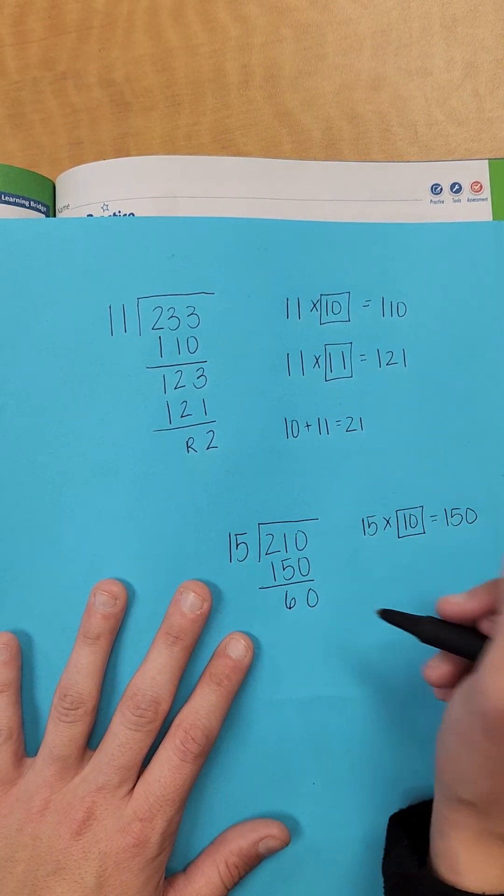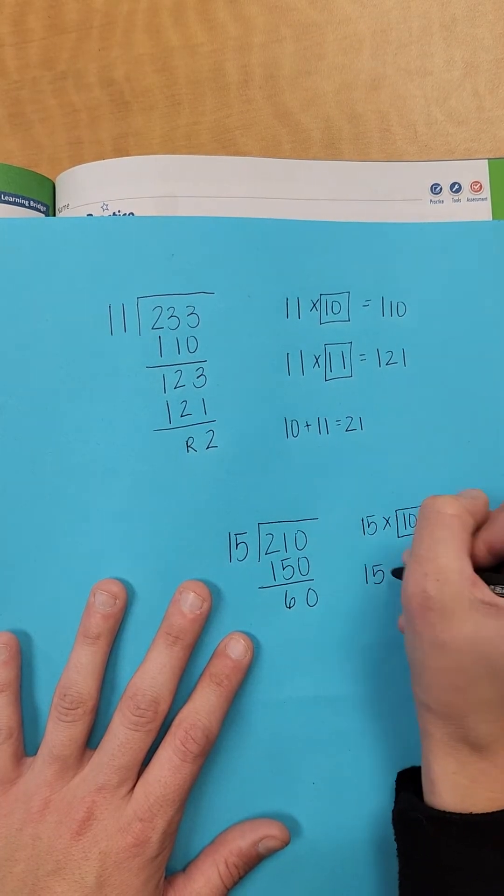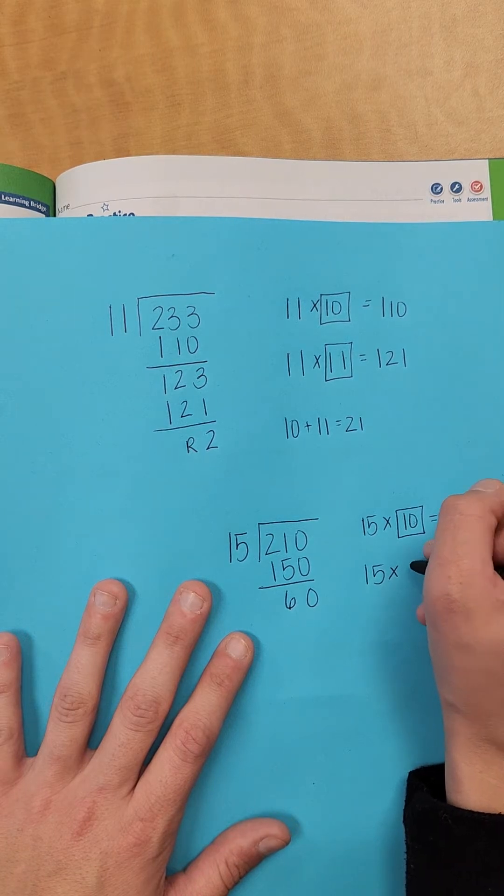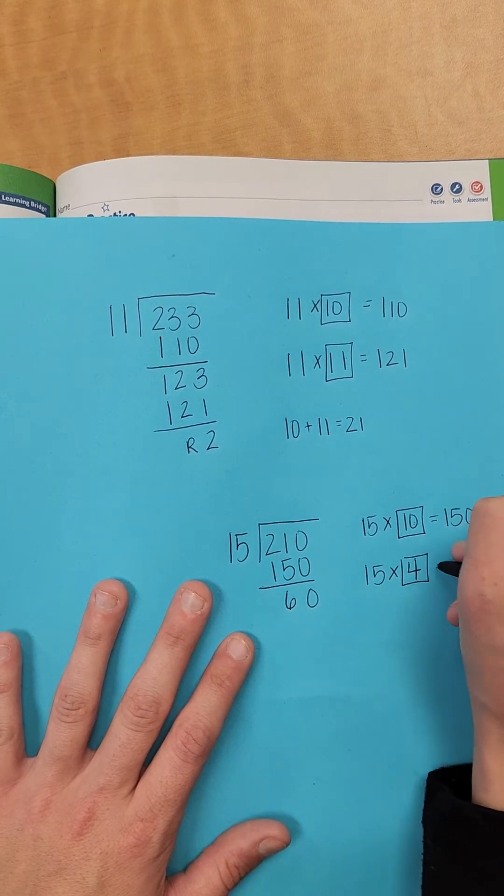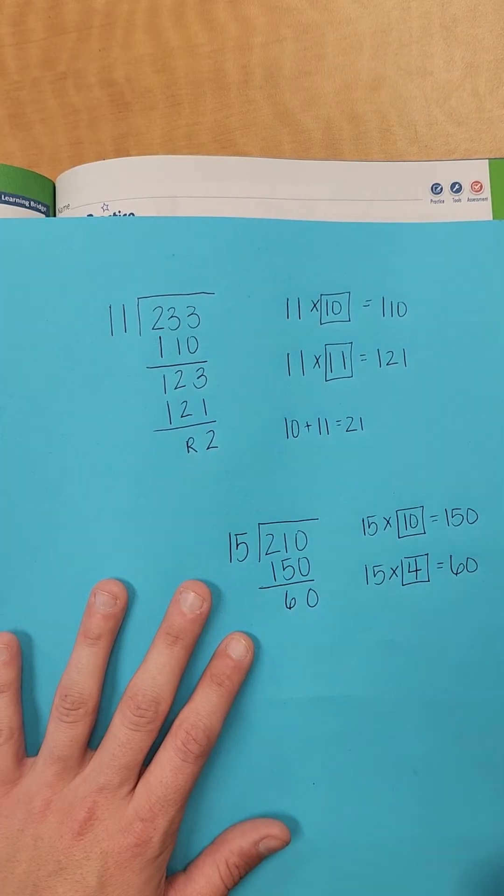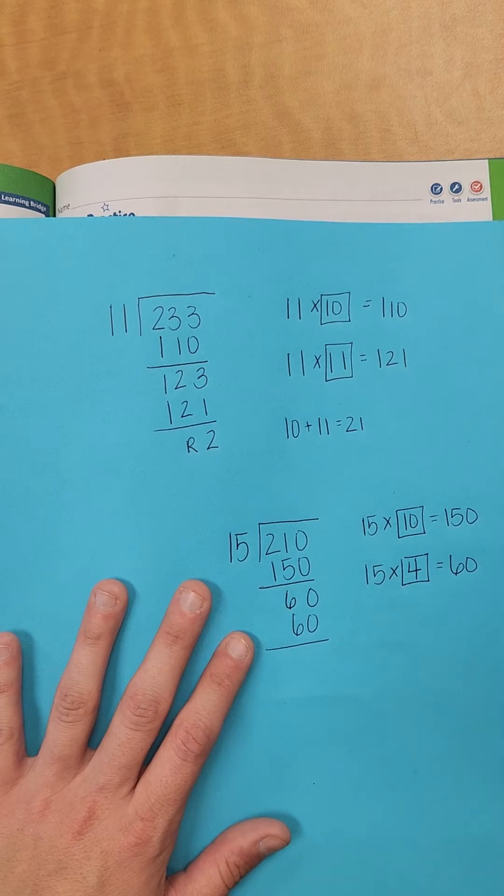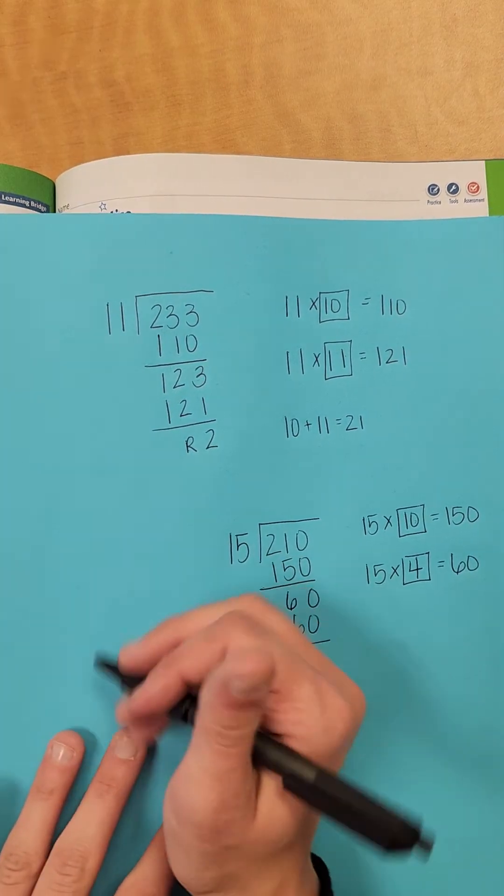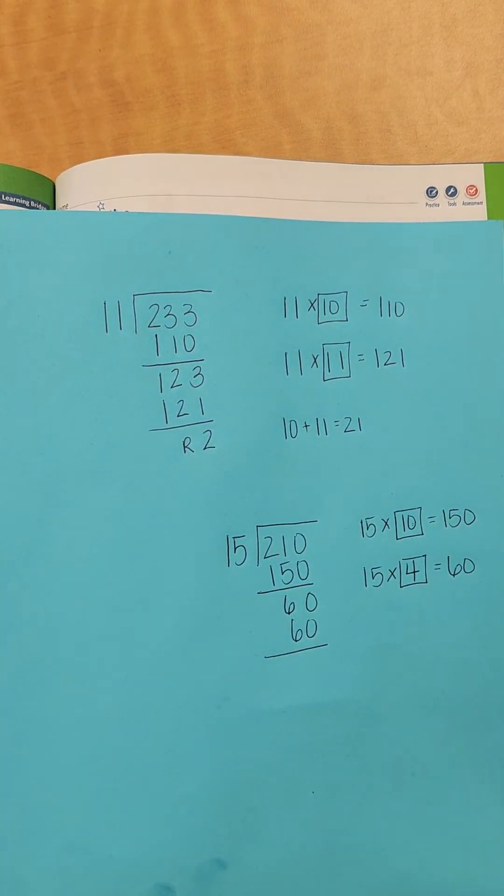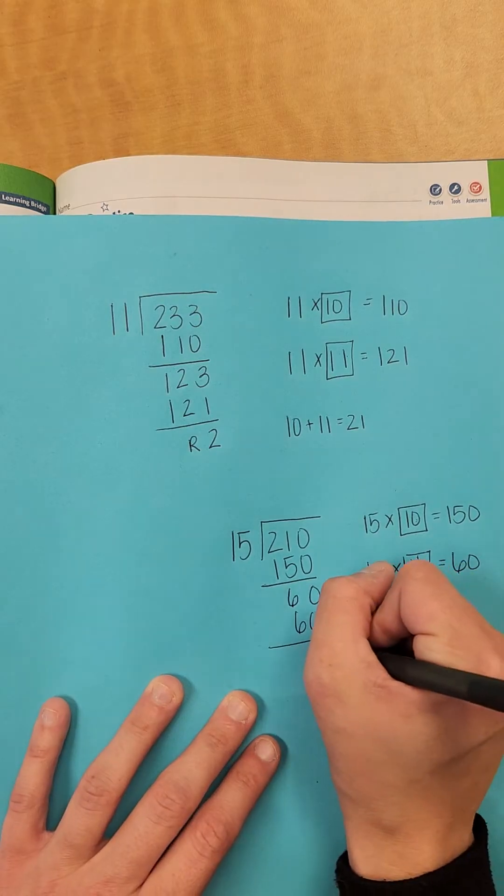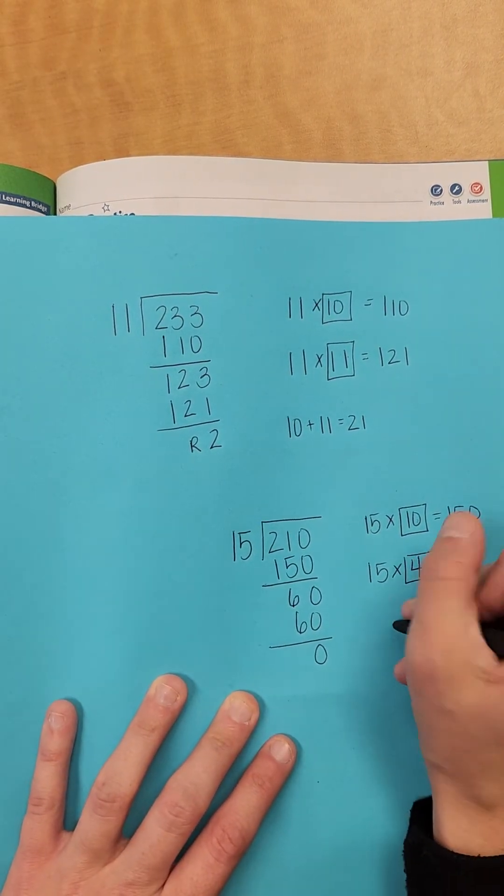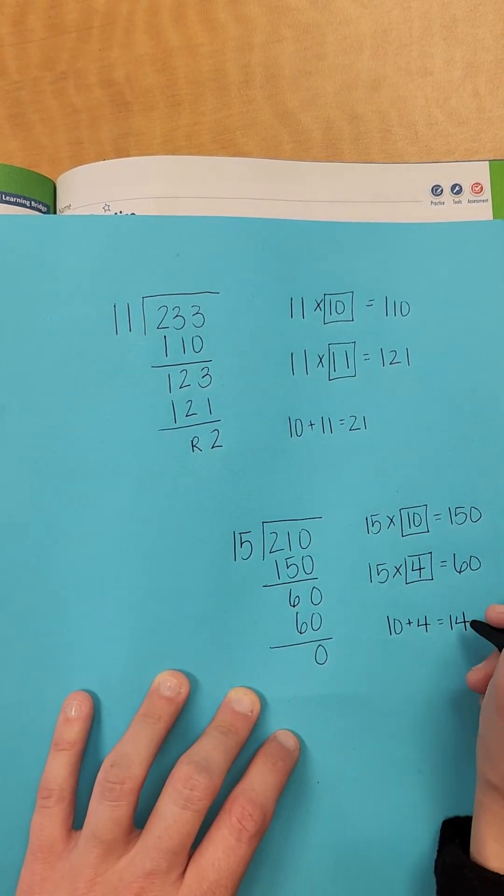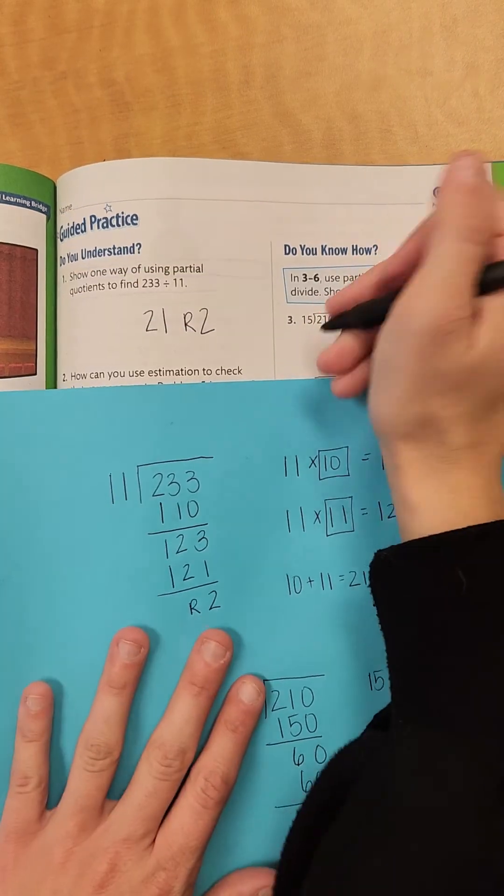Now 15 will go into 60. So 15 times, is it 5 times? No, it's not 5 times. It'll go into 4 times. 4 times 15 is 60. So that would go into it evenly. And if you're like, I don't remember what 15 times 4 is, work it out on the side, double check yourself if you need to. That way you have the right answer. So that's 0. So there's no remainder. So then we would add up 10 plus 4 equals 14. So 14 would be your answer.